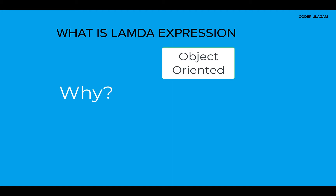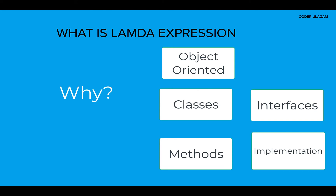The object-oriented concepts like classes, methods, interfaces, and polymorphism still exist — they are not gone with lambda expressions. If you think of lambda expressions, it's a way of implementing interfaces. I'll get into the details when we do the lambda expression examples, and you'll understand better.